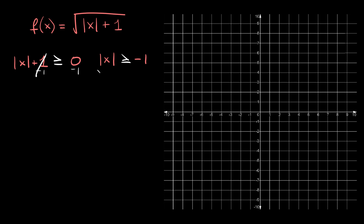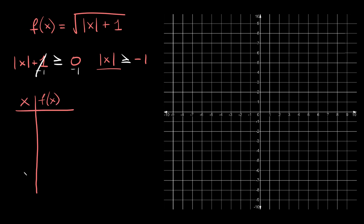Now that we know we can plug in any number for x, let's make a little xy table so we can graph some points. So this is the table — xy, or instead of y we're using f(x). The x values I'm going to pick are going to be a little intentional: negative 3, negative 1, 0, 1, and 3.